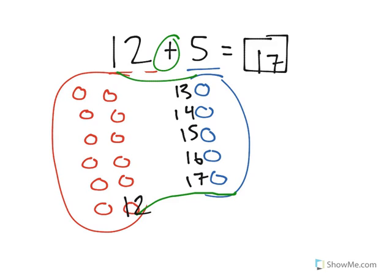12 plus 5 is equal to 17. That is how you solve a simple addition problem.